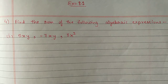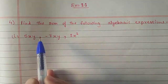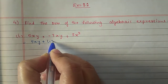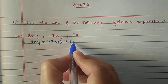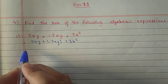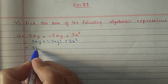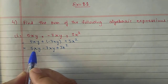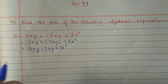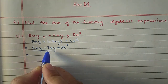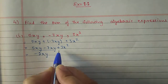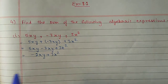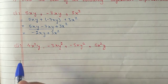These three expressions we have to add: 5xy plus minus 7xy plus 3x square. This plus and minus will become minus, so we get 5xy minus 7xy plus 3x square. These two we can simplify because they are like terms: 5xy minus 7xy will be minus 2xy, plus 3x square as it is, because these two are unlike terms so we cannot add them.